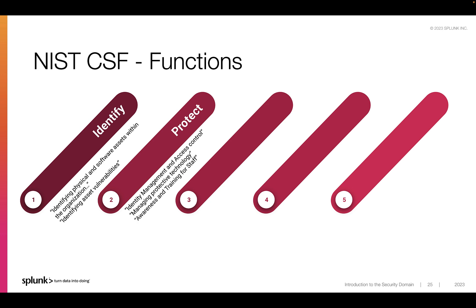Once systems, processes, and solutions have been identified, we need to see if they are actually working. This is where the detect function comes in, to enable the timely discovery of cybersecurity events. An outcome in this function would be implementing security continuous monitoring capabilities to monitor events and verify effectiveness of protective measures. Here, a security information and event manager software, or SIEM, like Splunk Enterprise Security, could be implemented. A SIEM collects logs and events from multiple types of systems and allows analysts to correlate all this data so they can see if there is something suspicious going on.